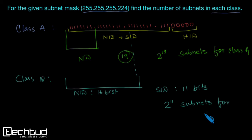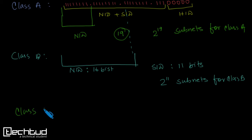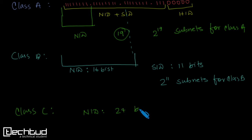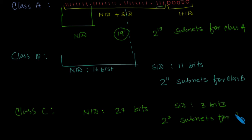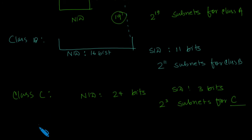That's 2^11 subnets for Class B. For Class C, the NID becomes the first three octets — 24 bits. So the SID bits are only these 3 bits, meaning the number of subnets is 2 to the power 3. As we don't use Class D and E, we won't calculate subnets for them.